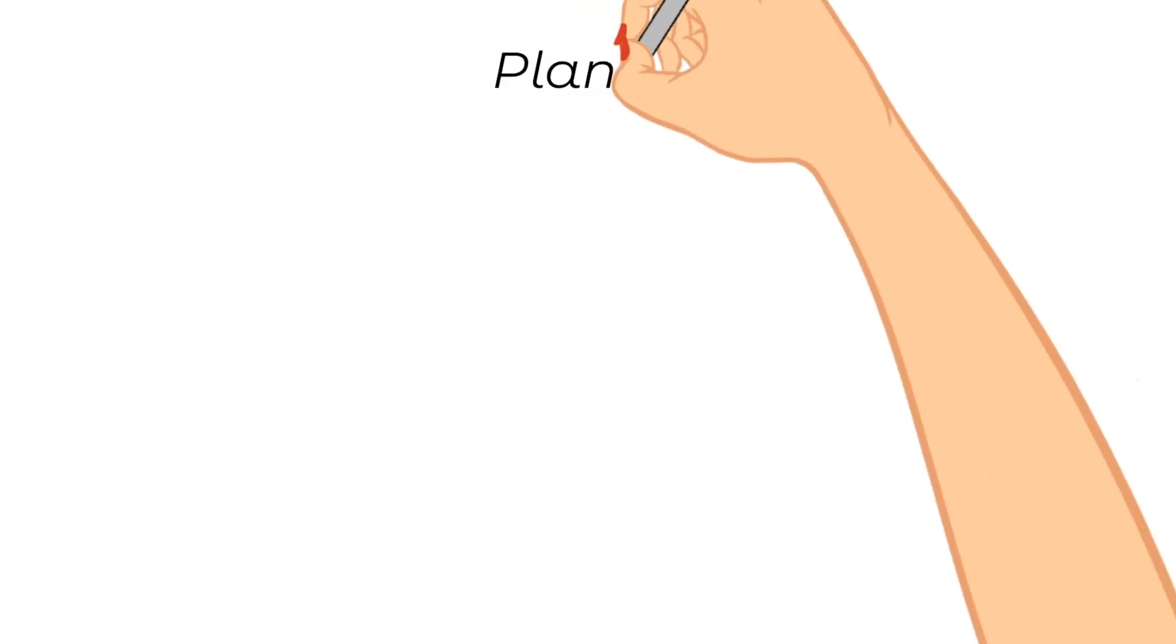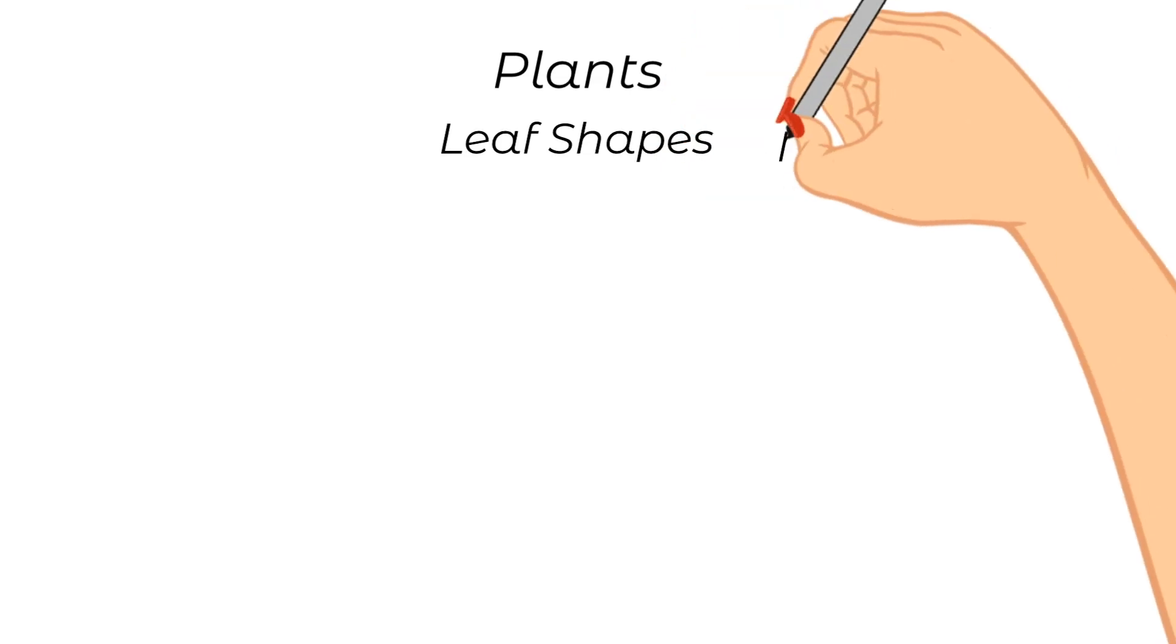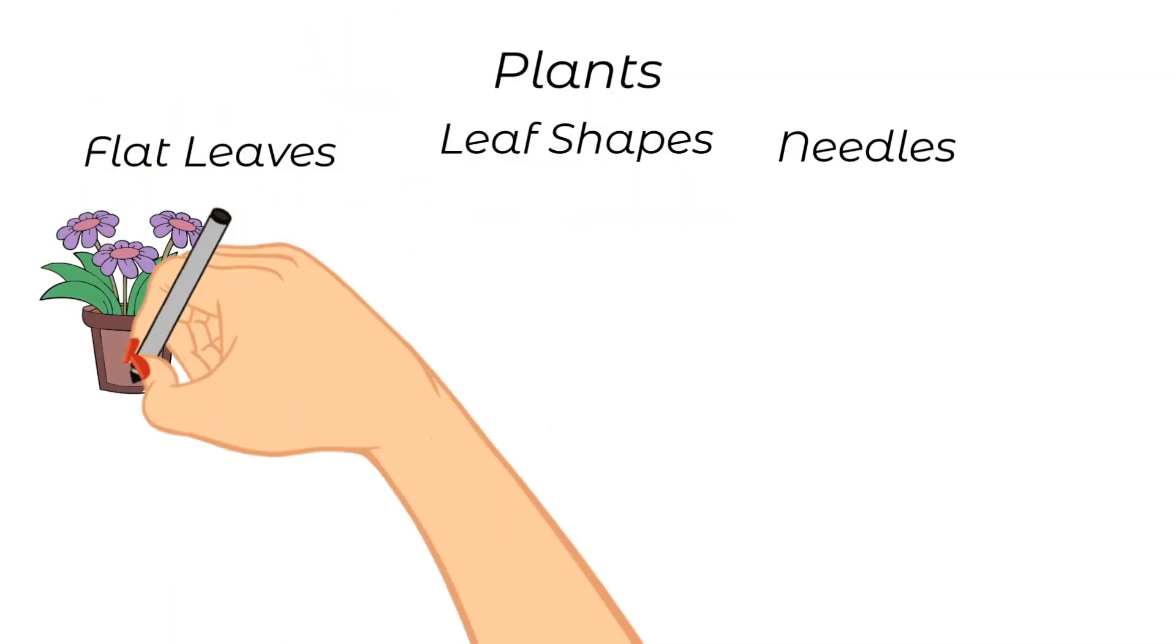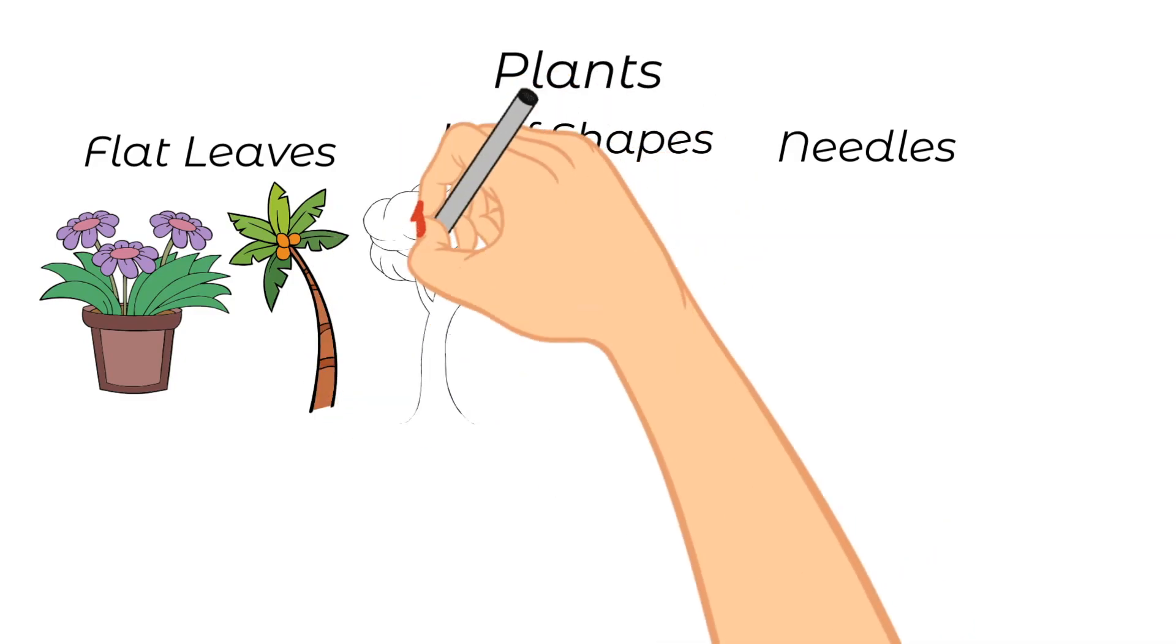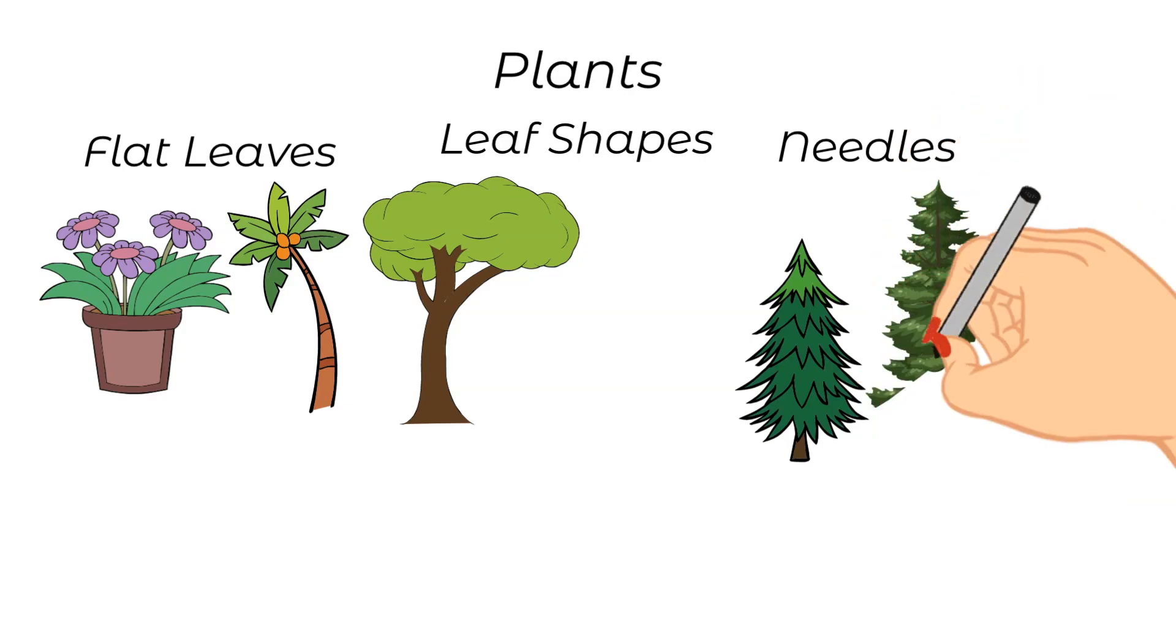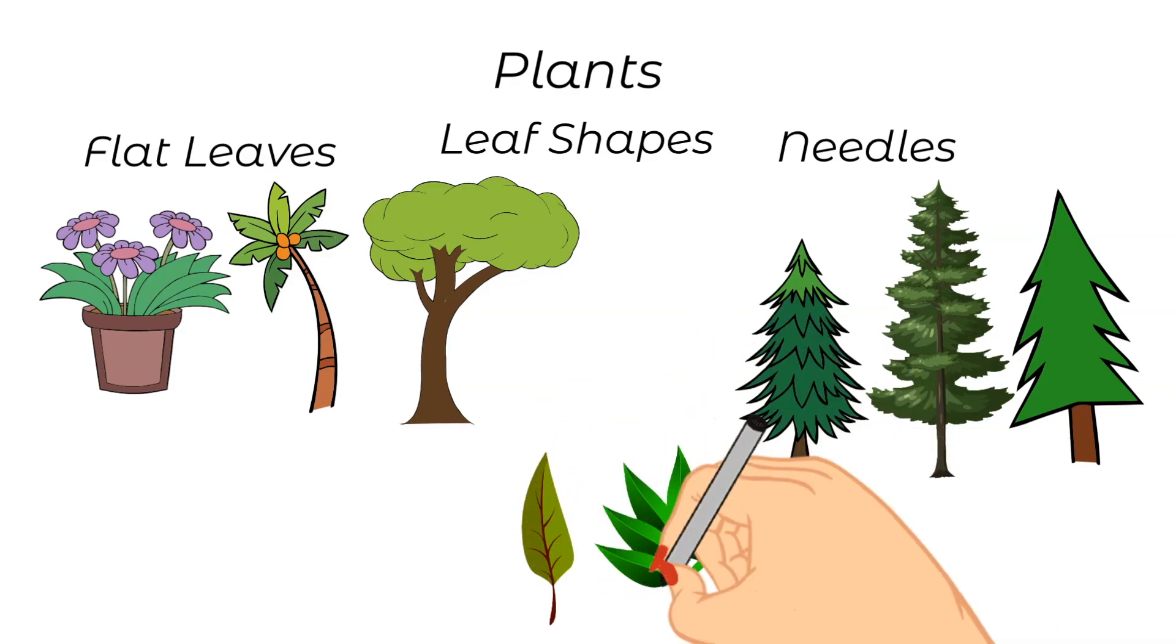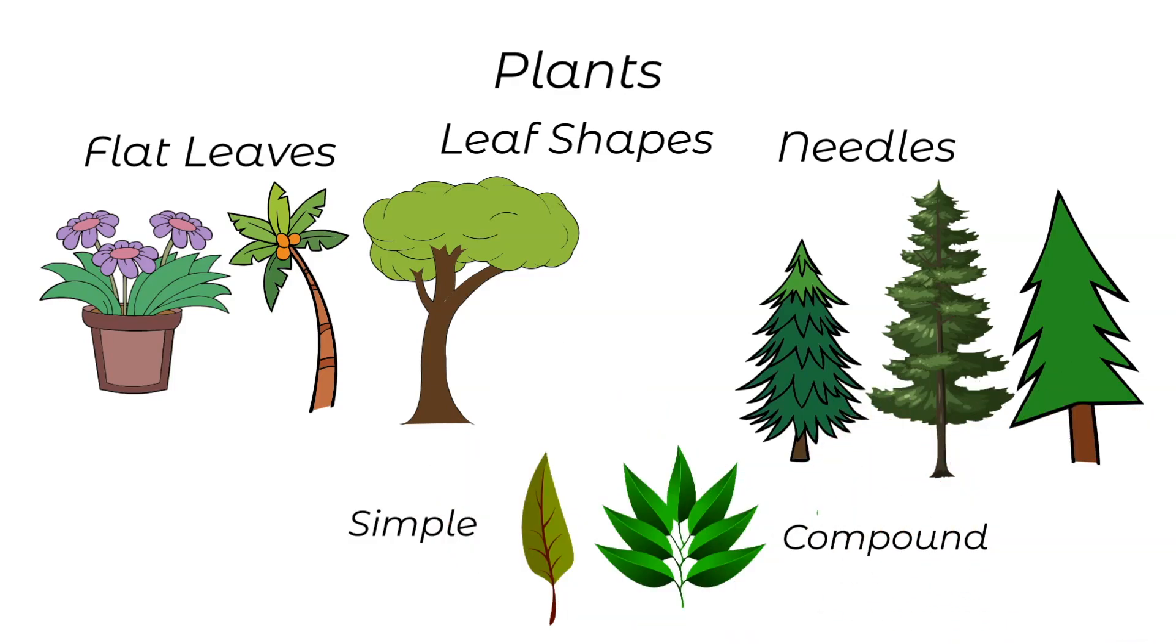Today we are going to be talking about some leaf shapes, and specifically we're going to talk about six leaf shapes. Broadly, leaves are classified into two categories: needles and flat leaves. And if you remember from last week, we talked about how flat leaves can be defined as simple and compound, but now we're going to dive deeper not only into flat leaves but also into talking about needles.